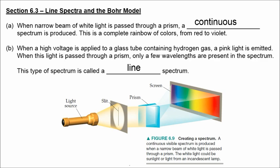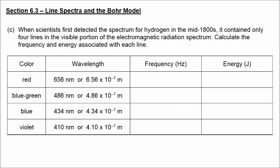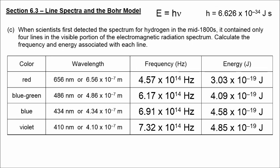In your textbook, Figure 6.9 shows a continuous visible spectrum with all colors of the rainbow, while Figure 6.11 shows the line spectra of hydrogen and neon — individual lines of color. When scientists first detected the hydrogen spectrum in the mid-1800s, it contained only four lines in the visible portion. We can calculate the frequency and energy associated with each line using the speed of light divided by wavelength in meters for frequency, then multiplying by Planck's constant for energy in joules.